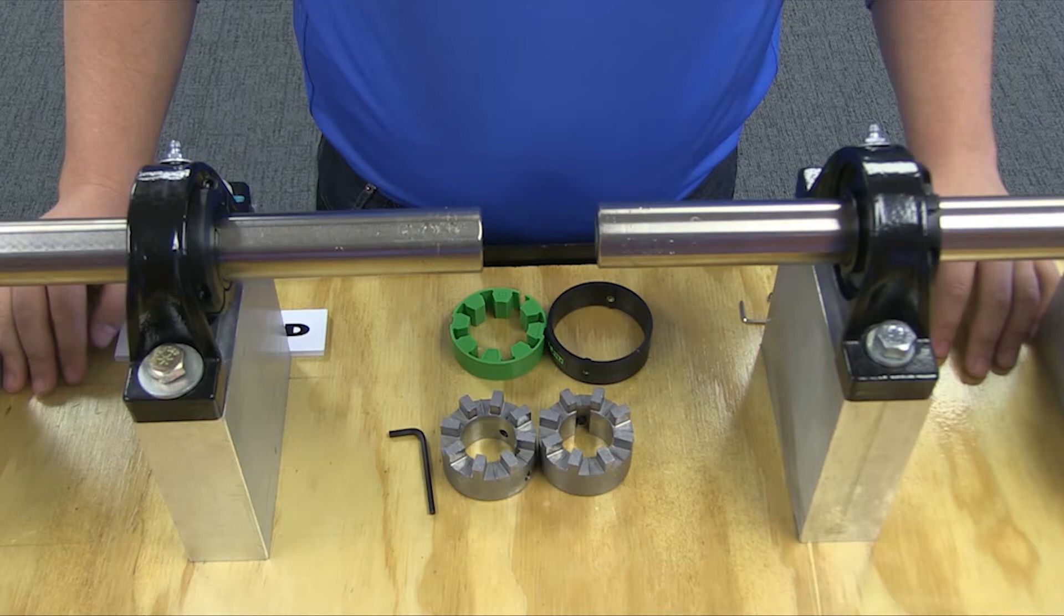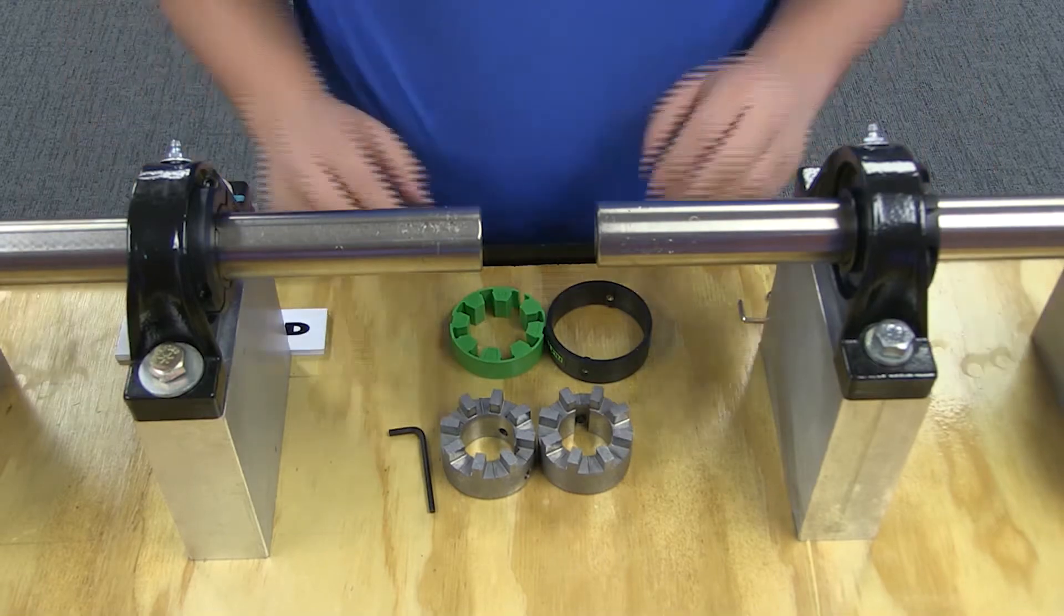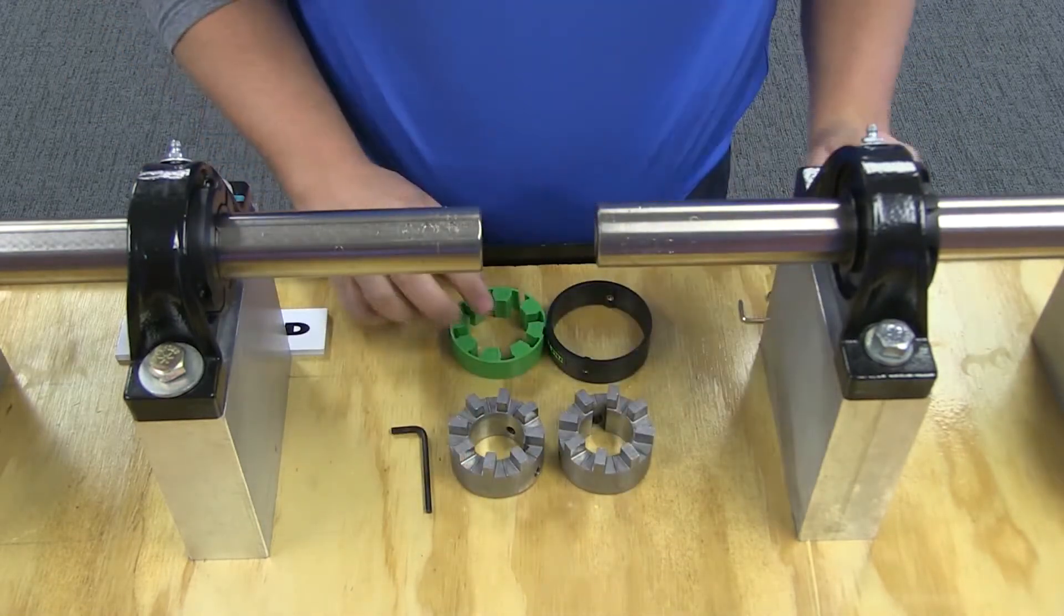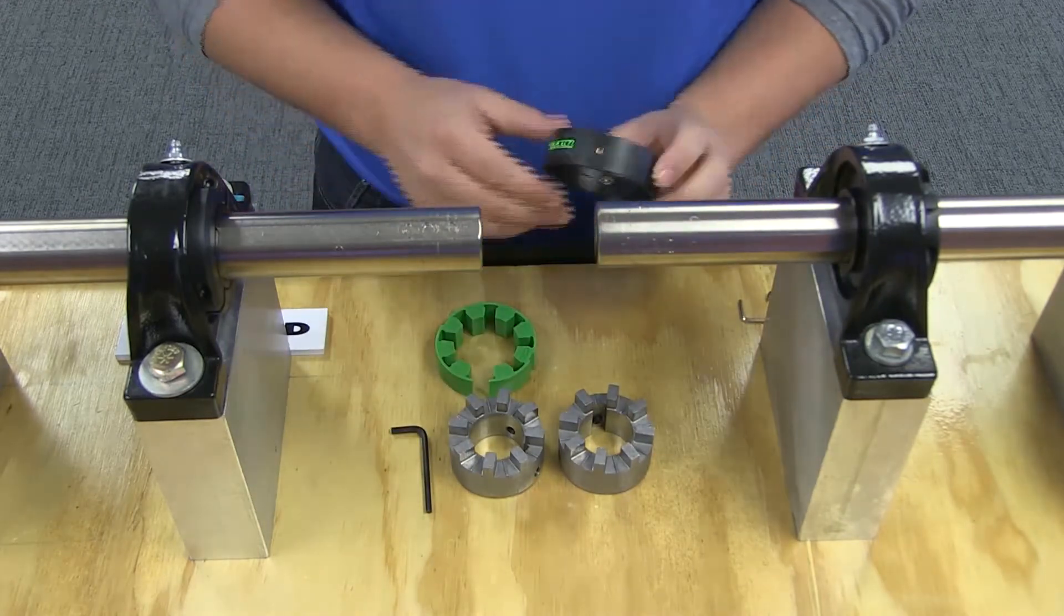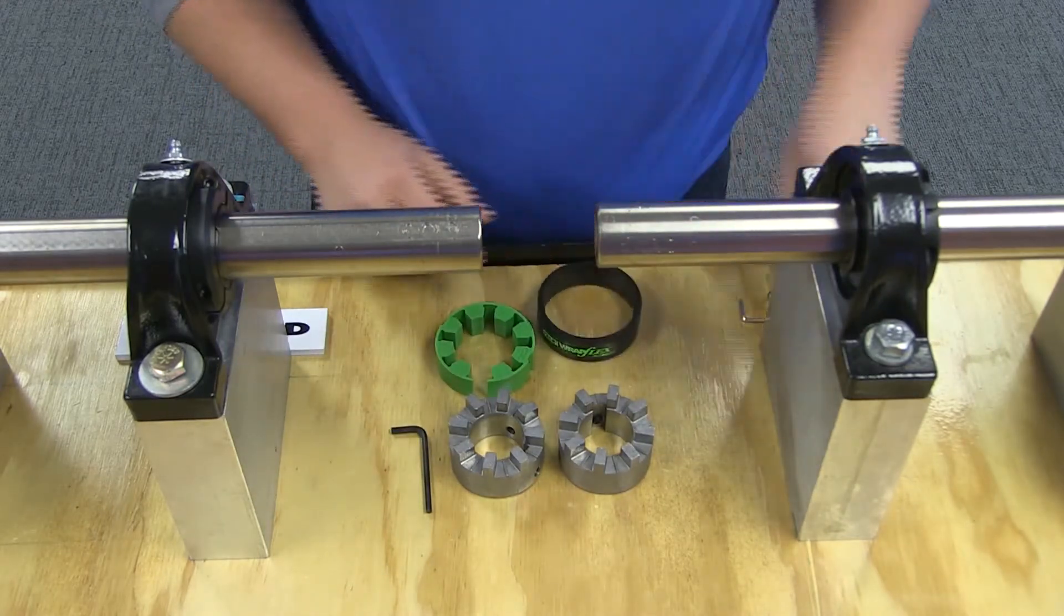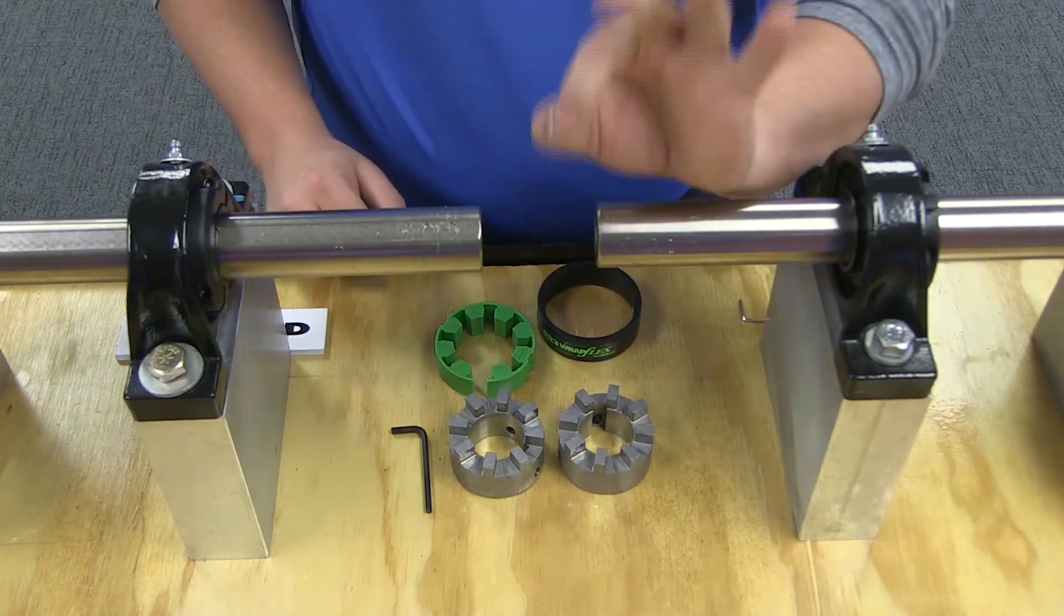Due to Radflex's simple design, there are just a few components to work with when installing this coupling: two hubs, the green wrap element, the retention cover, and the two screws you will need to hold the cover in place.